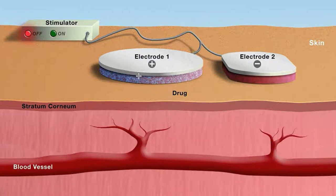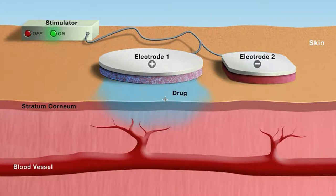Iontophoresis may seem esoteric but it is actually used as a drug delivery system. If you have a charged drug, you can place it in a small electrode on the skin with a neutral electrode, turn on a stimulator, and the charged drug will be released from the electrode, picked up in the bloodstream — a drug delivery system without an injection.